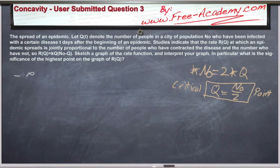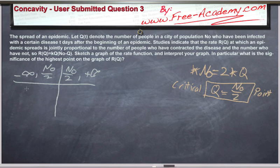But we still need to do the first derivative test. n0 over 2, and from n0 over 2 to positive infinity. So let's say this is equal to zero and this is equal to n0.